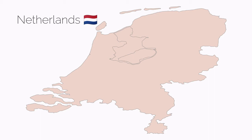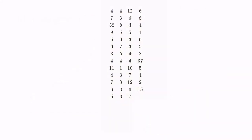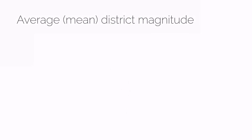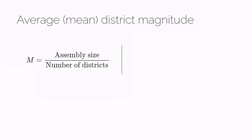Where, as in the Spanish case, we have many districts with different magnitudes, we need some way of summarising these numbers. Most researchers take the average or mean district magnitude — I'll use the letter M to refer to that. Average district magnitude is just the size of the assembly or legislature divided by the number of districts.